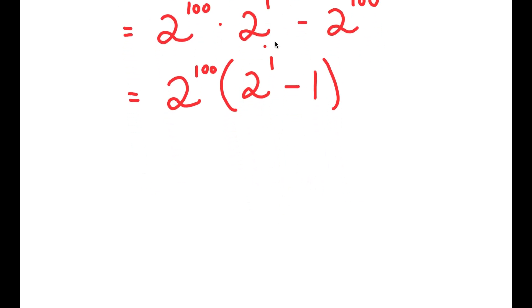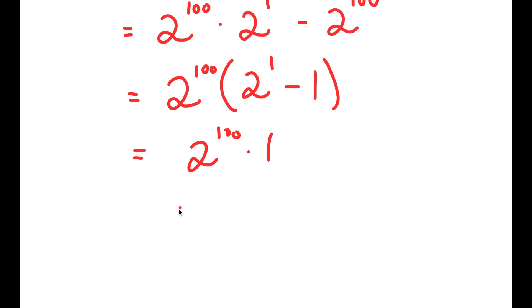Now, 2 to the power of 1 is equal to 2, and 2 minus 1 is 1. So I'm left with 2 to the power of 100 times 1, which is equal to 2 to the power of 100.